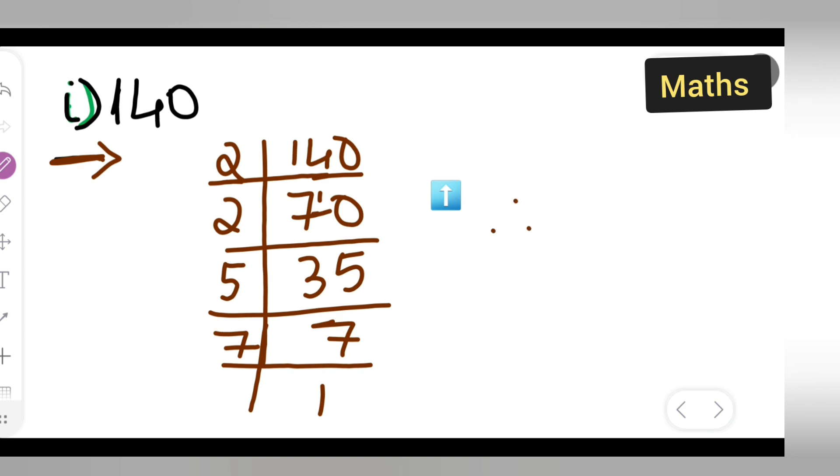Therefore, you can write down the final statement. 140 is equal to - let me take some more space over here. 140 is equal to 2 multiplied by 2 multiplied by 5 multiplied by 7.